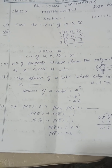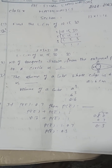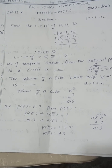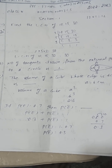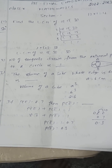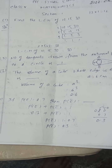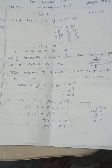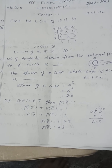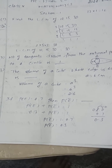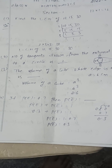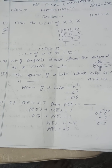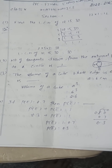Find the LCM of 10, 15, 30. Here, by using the division method: divide by 2 — giving 5, 15, 15; then divide by 5 — giving 1, 3, 3; then divide by 3 — giving 1, 1. For the LCM, the product of divisors is 2 × 5 × 3, that is 30.